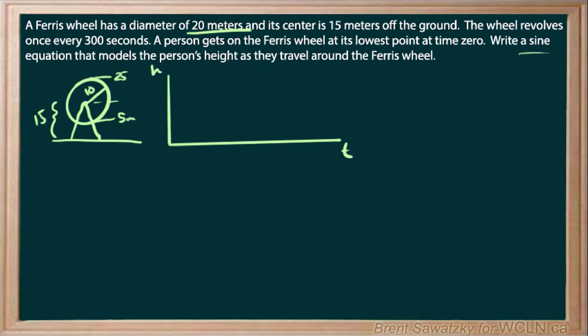So we're told that we're looking at a sine graph, and we're also told that the person gets on the Ferris wheel at its lowest point at time zero. So time is zero and let's draw that in at 15 meters, and so let's just draw a little bit of a sinusoidal graph from there and something like that.